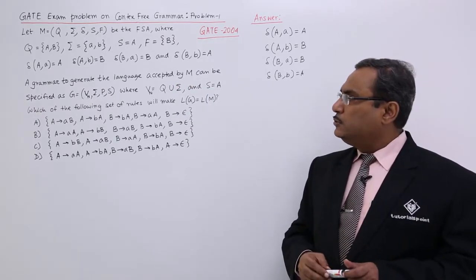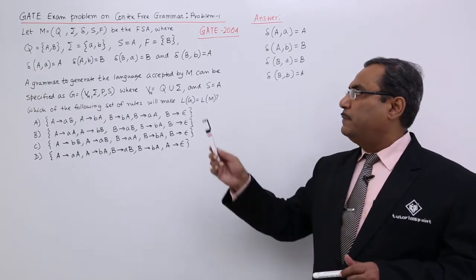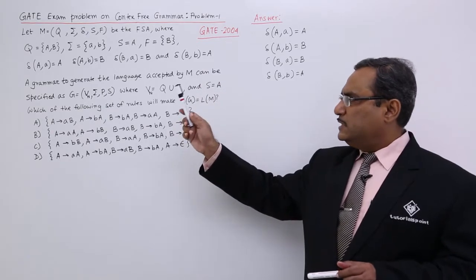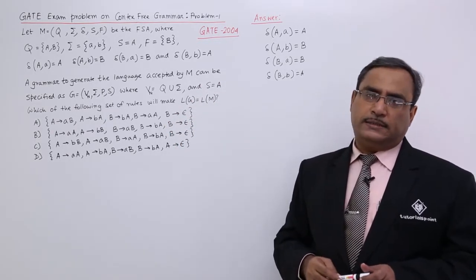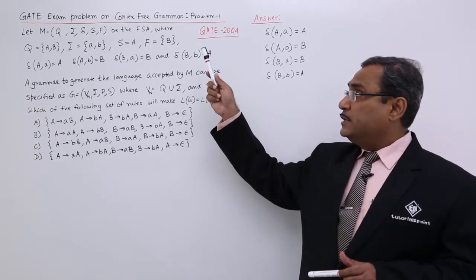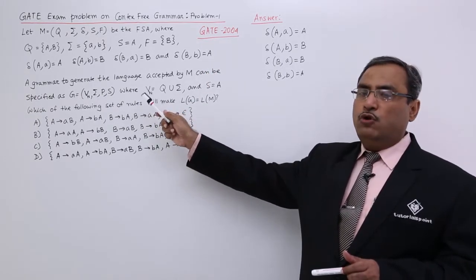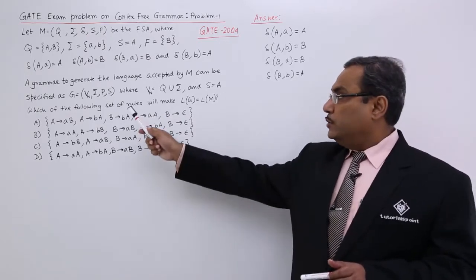A grammar to generate the language accepted by M can be specified as G is equal to V n sigma P S. From that finite state automaton, they are trying to get one equivalent grammar.